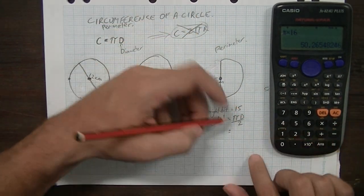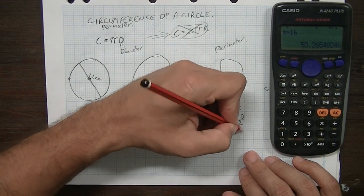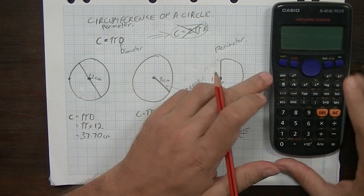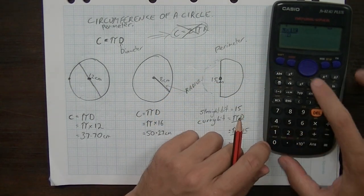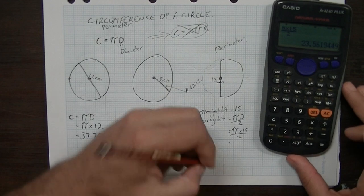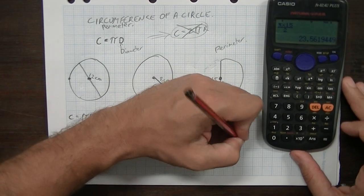Now, the diameter is 15, so it's going to be pi times 15 divided by 2. You can put that into your calculator. Pi times 15 divided by 2. You get 23.56.